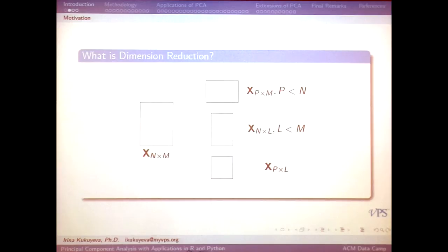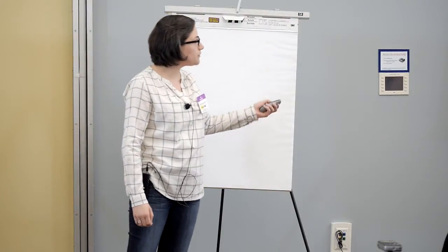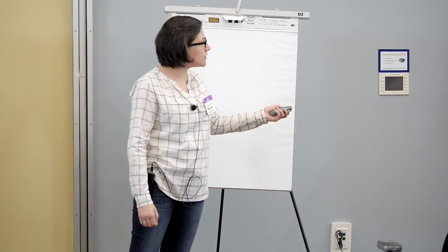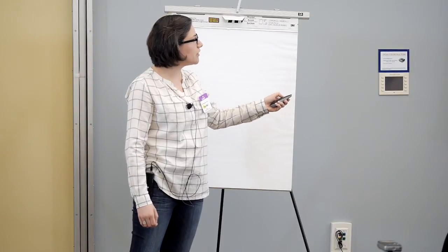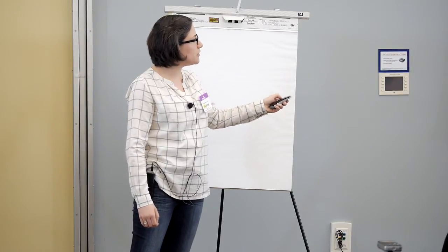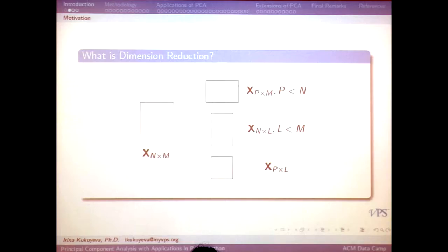We can reduce the number of variables — that's the number of columns. Or we can reduce the number of rows, or we can reduce both the rows and columns. In this tutorial I'm going to go through the second example: reducing the dimensionality of the columns of our data set.